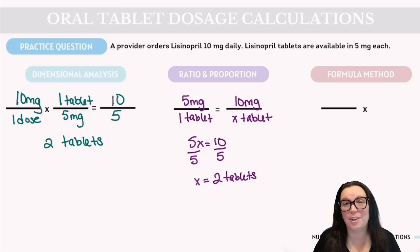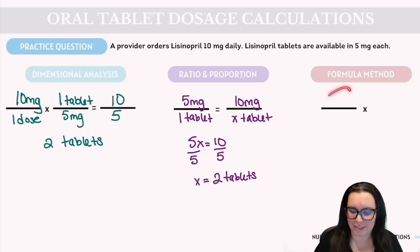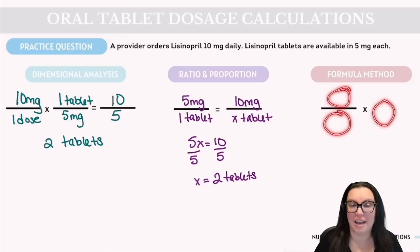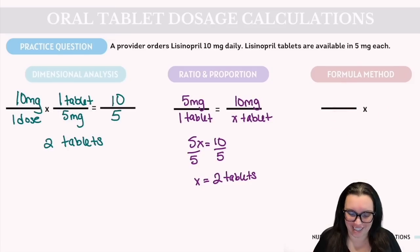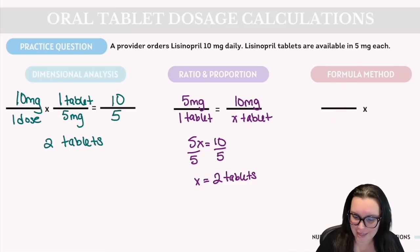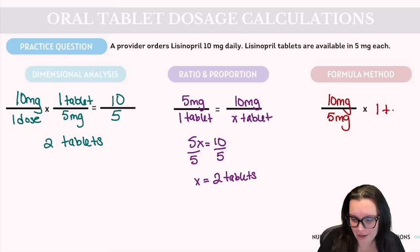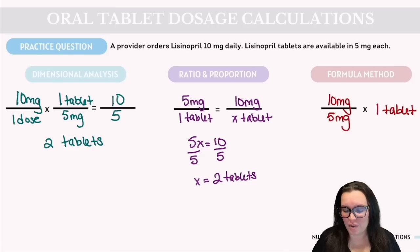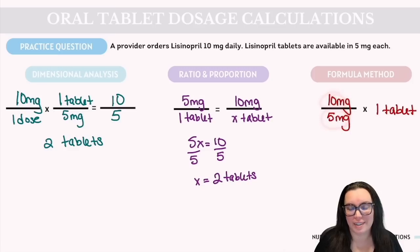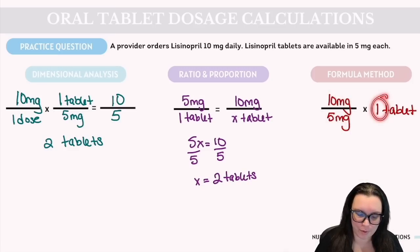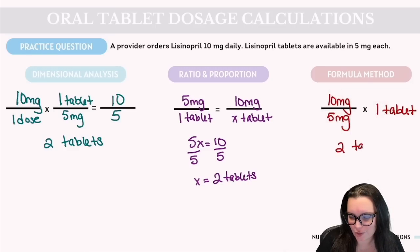Lastly, we use the formula method: desired over have, multiplied by quantity. We desire 10 milligrams, we have 5 milligrams, available in one tablet. So 10 ÷ 5 = 2, multiplied by 1, giving us the correct answer of 2 tablets.